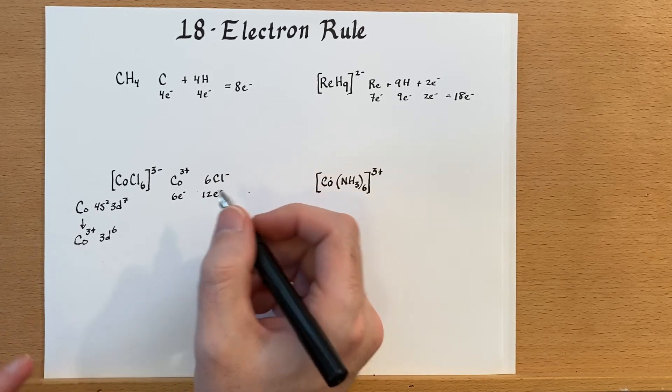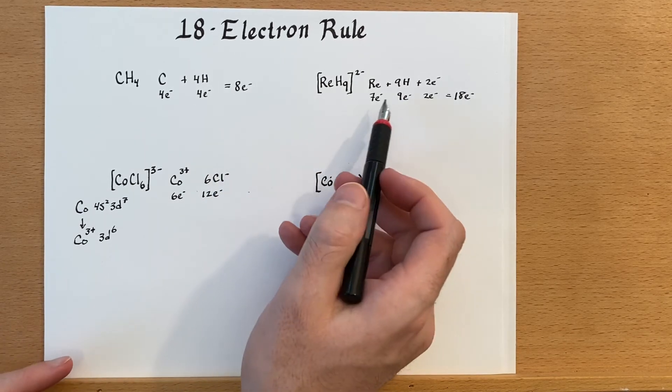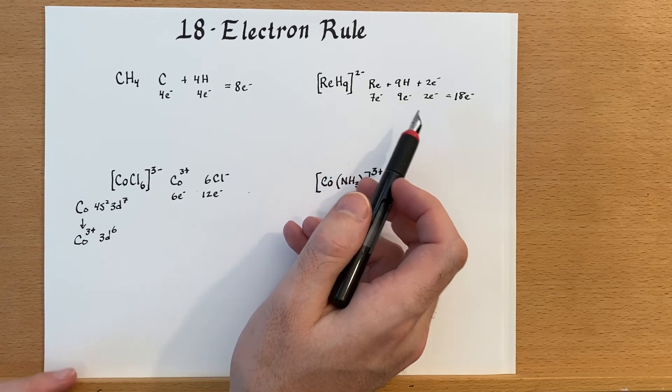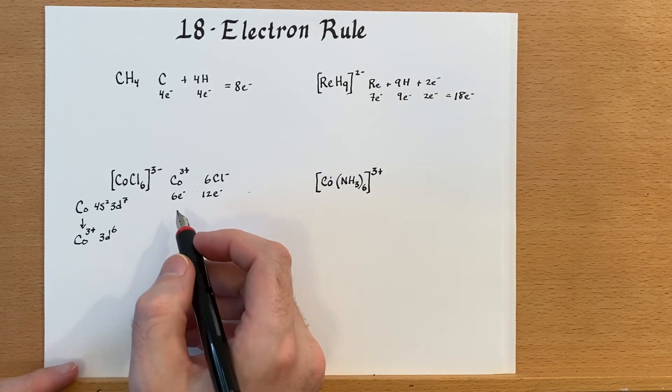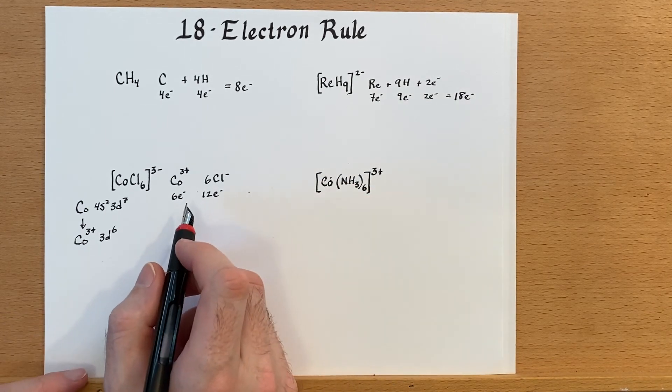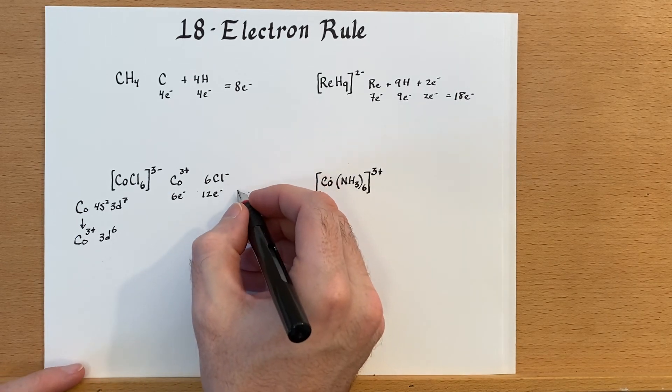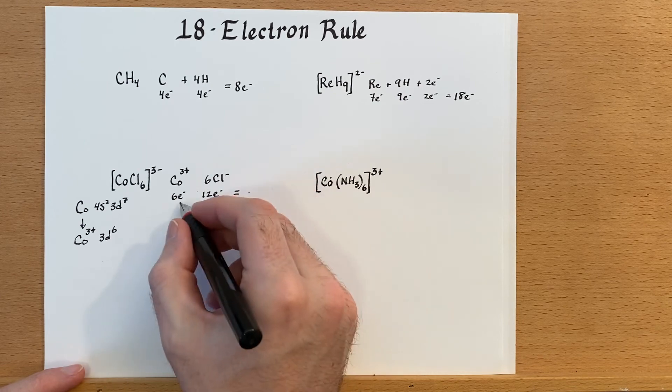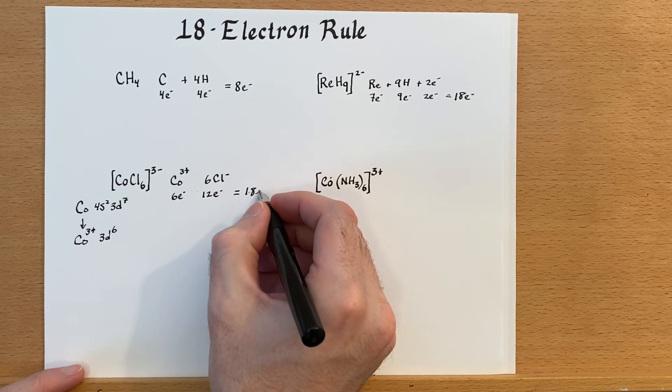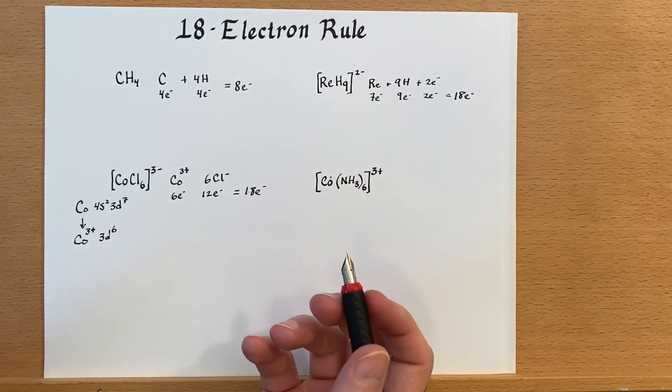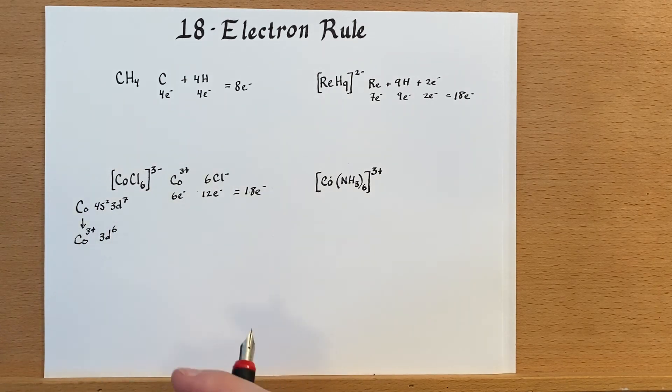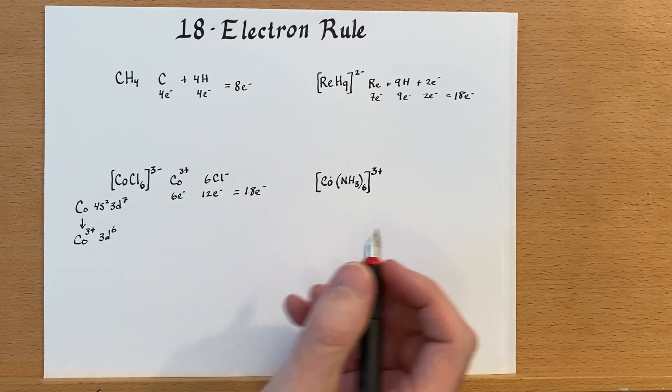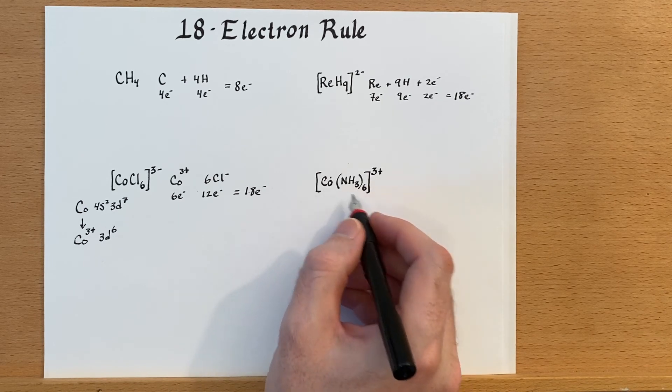And there are different ways of counting this. Up here we used a more covalent way of counting; down here we're using an ionic way of counting. But both are valid and both give the same result. So six plus 12, it's 18 electrons. All the examples that I've chosen should be 18 electrons.